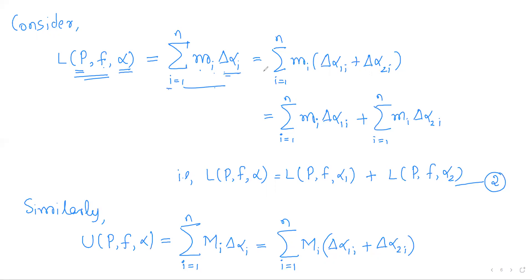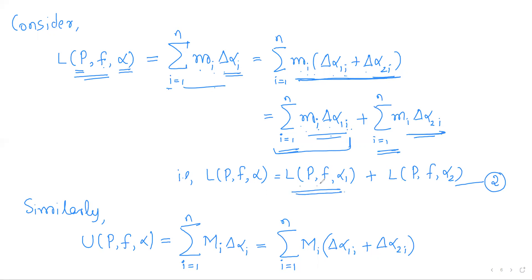Since Δαᵢ = Δα₁ᵢ + Δα₂ᵢ, we split the sum: Σ mᵢ · Δαᵢ = Σ mᵢ · Δα₁ᵢ + Σ mᵢ · Δα₂ᵢ. The first summation Σ mᵢ · Δα₁ᵢ is the lower Riemann-Stieltjes sum of f with respect to P and α₁, denoted L(P, f, α₁). Similarly the second is L(P, f, α₂). So L(P, f, α) = L(P, f, α₁) + L(P, f, α₂).